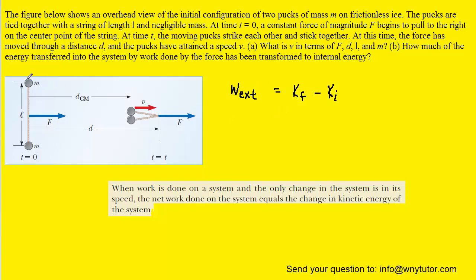In this case, our system is the two pucks, each of which has a mass of M. We can see that there is an external force being applied to the system marked F. We also recall that external work would be equal to that force multiplied by the displacement that our system undergoes. What we want to do is make sense of that displacement in this diagram, because that turns out to be the key to part A.